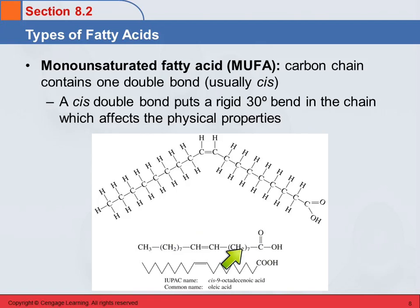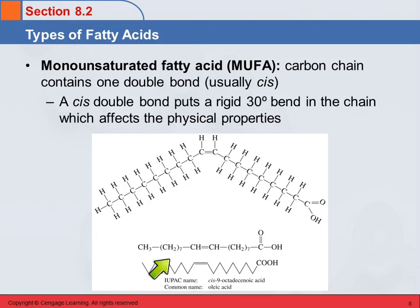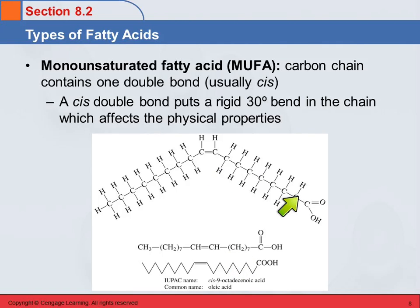In this condensed formula, we're gathering up these CH2 groups — there are seven of them — and lumping those together. Here's the double bond, kind of in the middle, and then there's another seven CH2 units on the other side. Or we can look at the skeletal formula, the line-angle diagram.